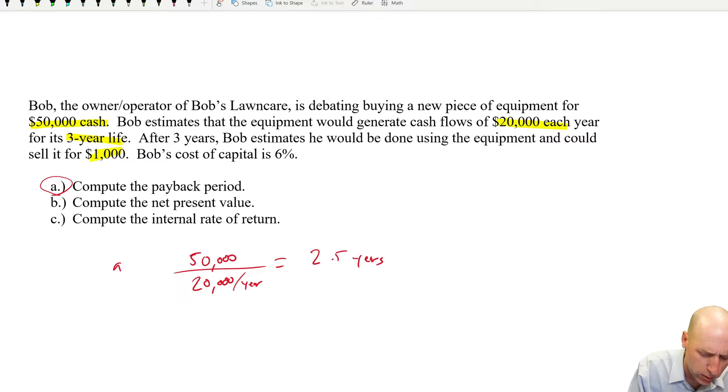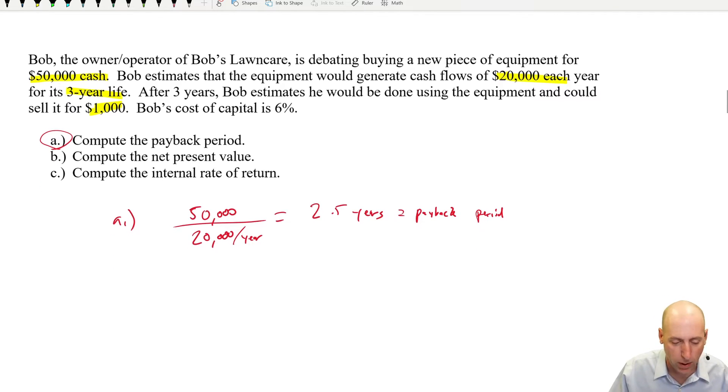Generally speaking, shorter payback periods are thought of as better or at least less risky. So that's a fairly straightforward question. The payback period for this is two and a half years.